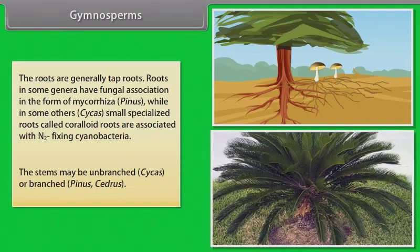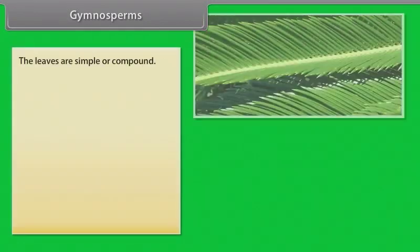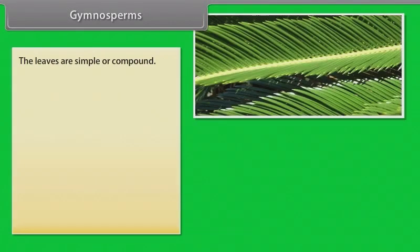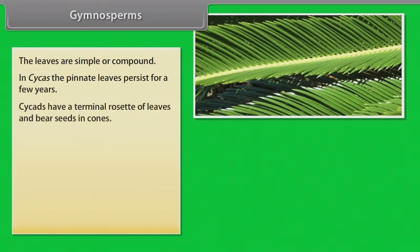The stems may be unbranched like Cycas or branched like Pinus and Cedrus. The leaves are simple or compound. In Cycas, the pinnate leaves persist for a few years. Cycads have a terminal rosette of leaves and bear seeds in cones.